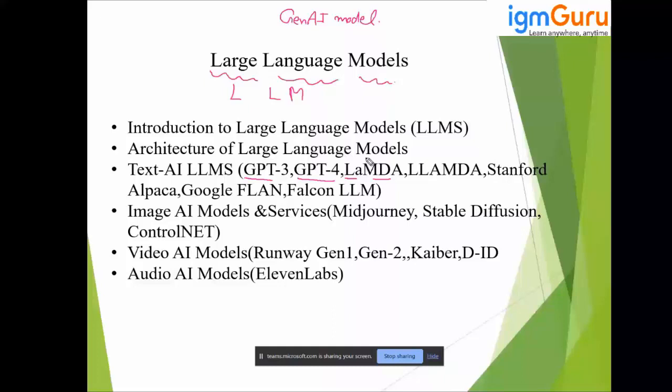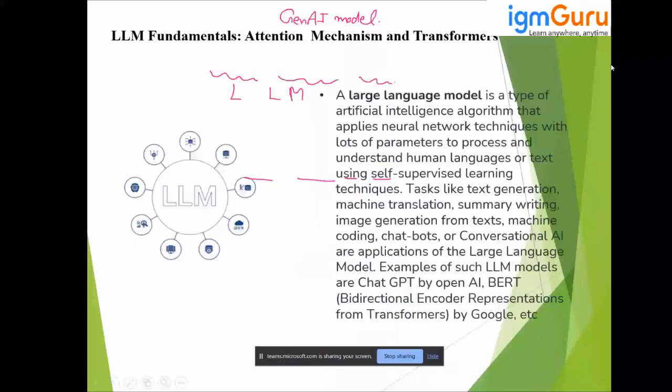If we discuss LLM architectures, behind the scene — as I discussed in the last lecture about transformers — what we have in LLM fundamentals is that a large language model is a kind of AI algorithm, or you can say a neural network technique, which has a lot of parameters to process and create an intelligent system that can understand human language or text using self-supervised learning.